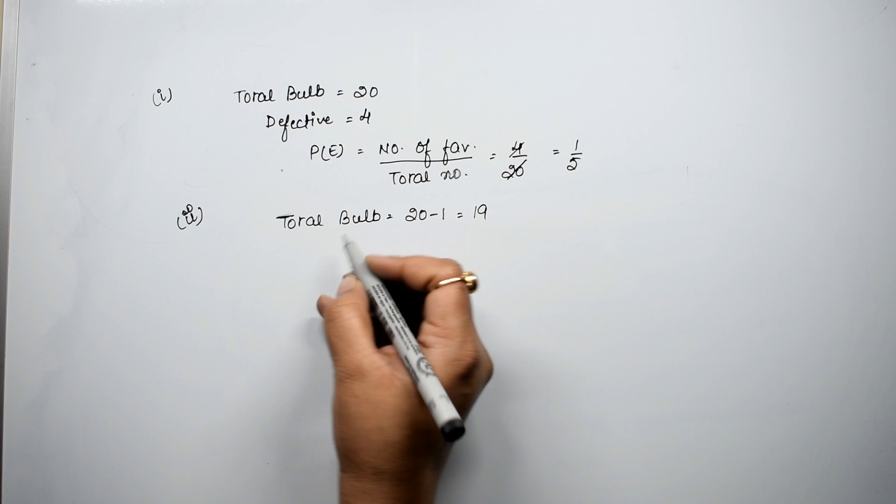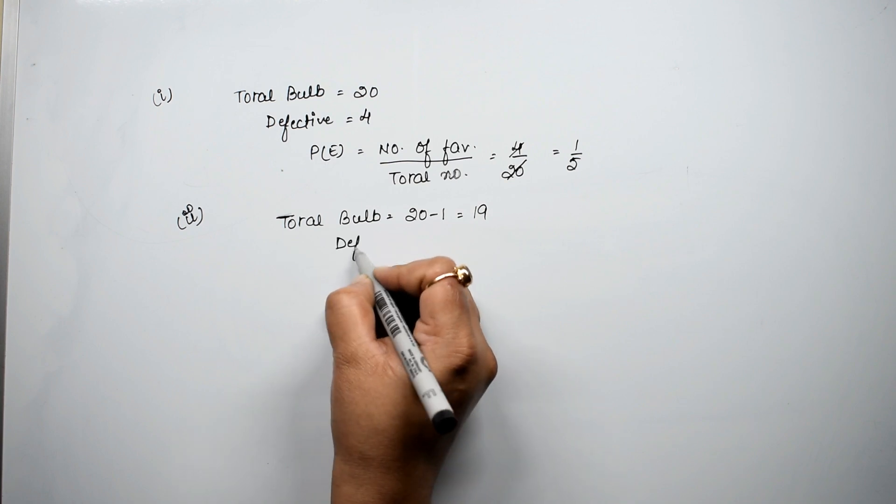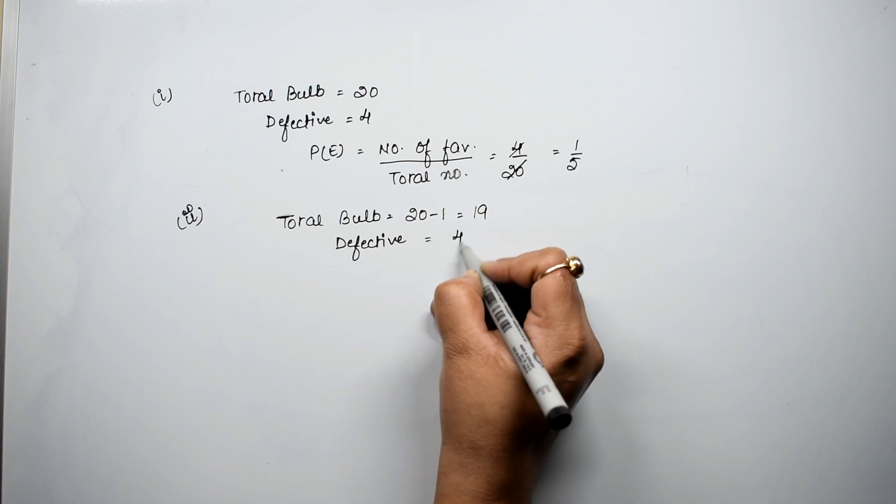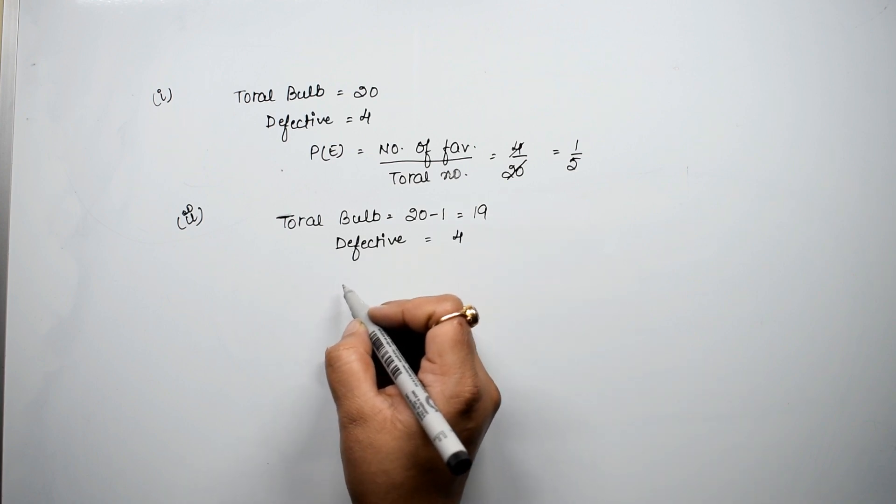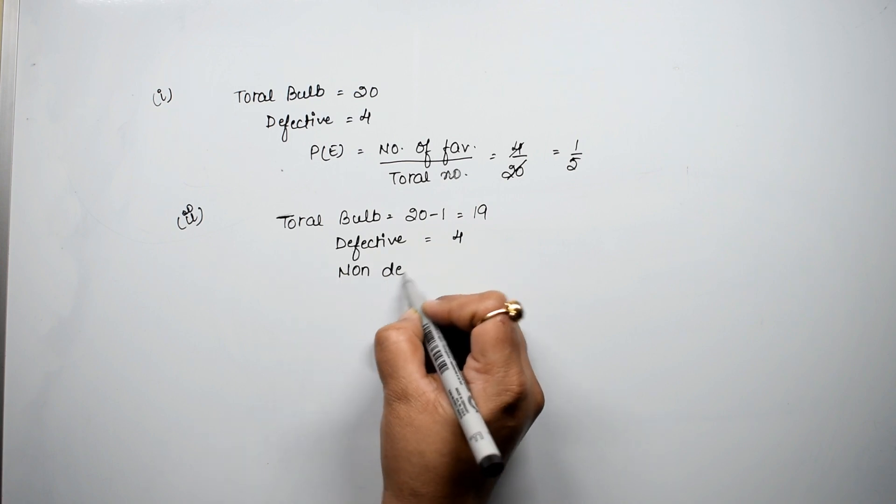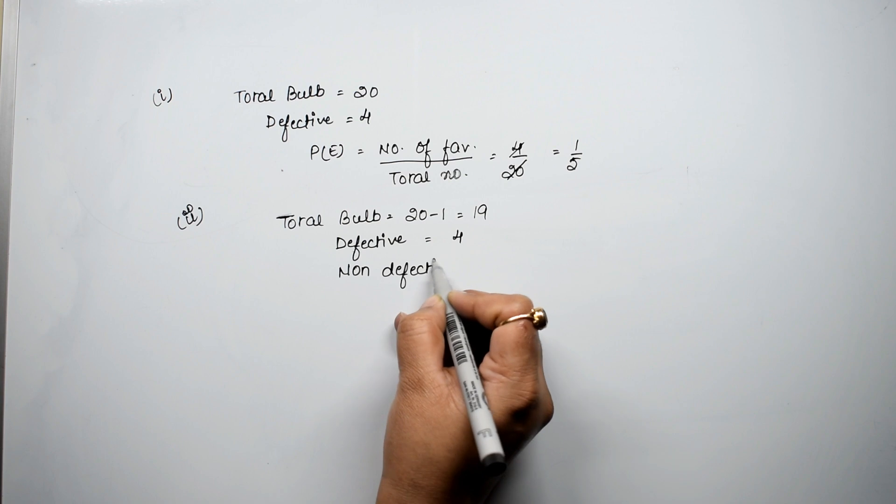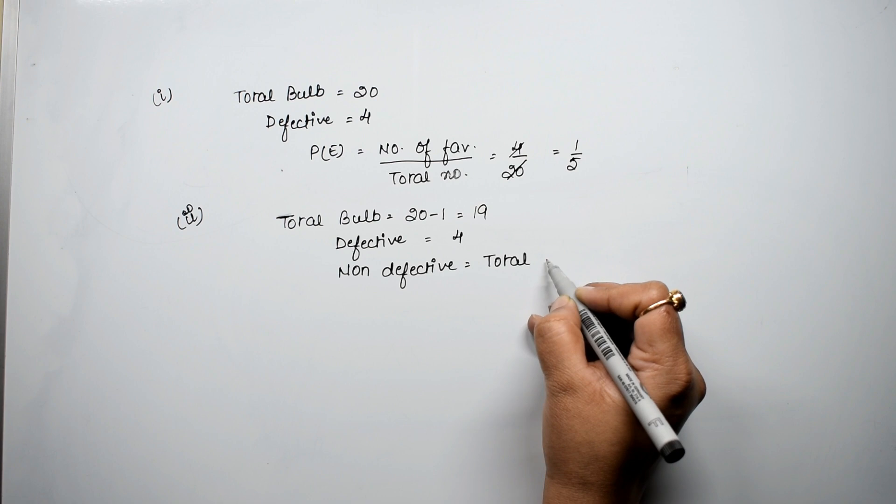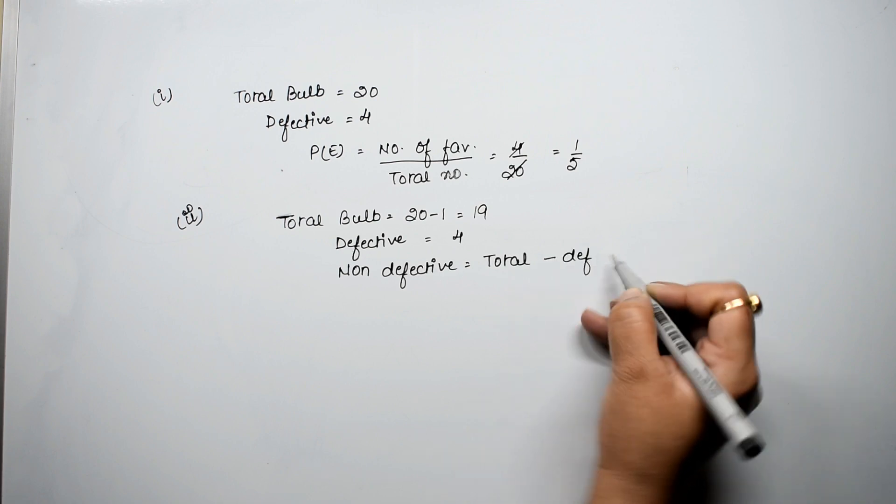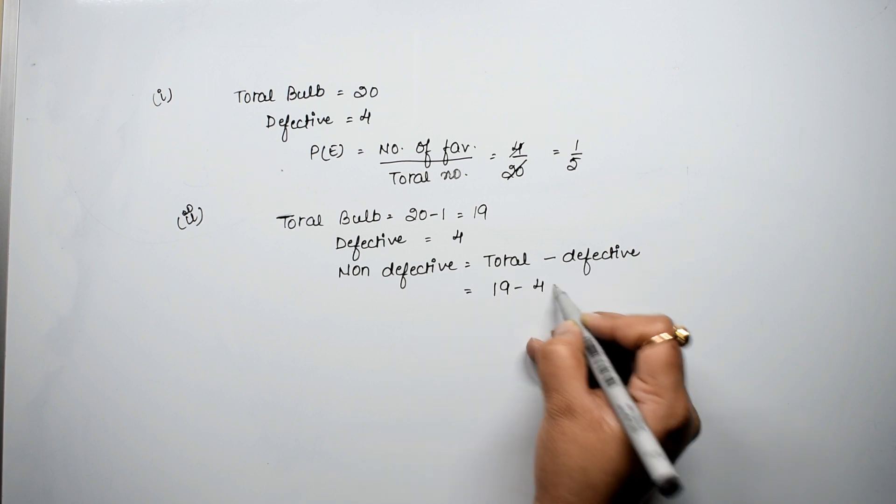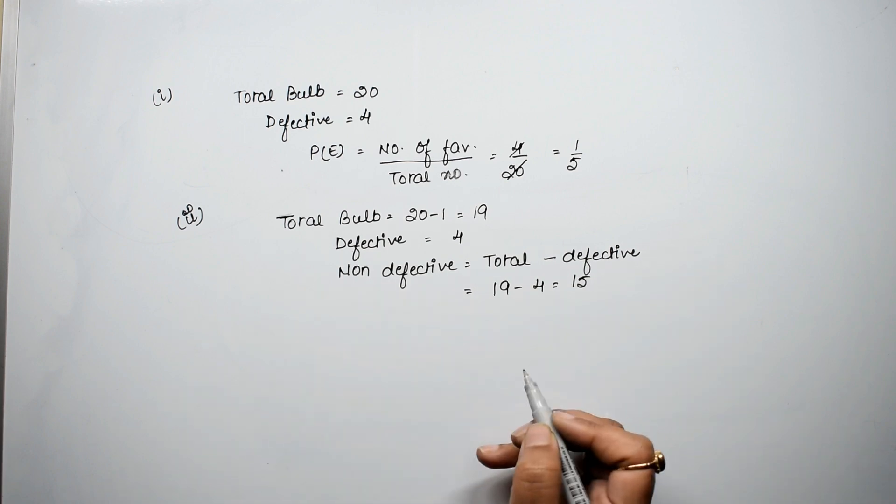How many defective were before? 4, right? Now, how many non-defective were there? In total, we had defective which we subtract. So how many non-defective are there? Defective were 4, so from 19 total, that is 15 non-defective.